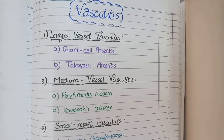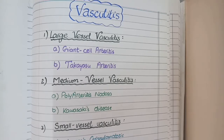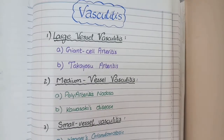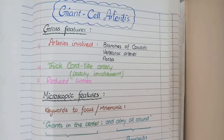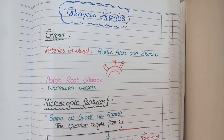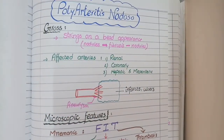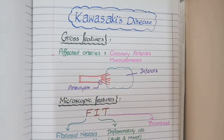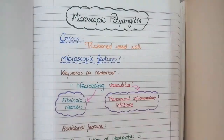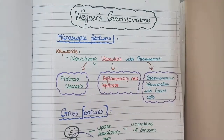In this video we will study the pathology of vasculitis, covering the morphological changes of each type and correlating them with clinical features. Vasculitis means inflammation of vessel walls. Depending on the location of vessels, it is divided into large vessel vasculitis, which includes giant cell arteritis and Takayasu arteritis; medium vessel vasculitis, which includes polyarteritis nodosa and Kawasaki's disease; and small vessel vasculitis, which includes Wegener's granulomatosis, microscopic polyangiitis, and Churg-Strauss syndrome.